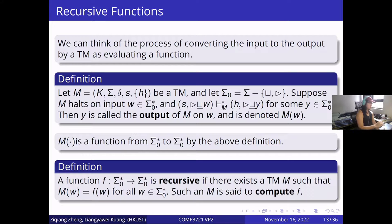We can think of the process of converting the input to the output by a Turing machine as evaluating a function. This function is recursive if there exists a Turing machine, so that all the mapping in this function could be computed by Turing machines.